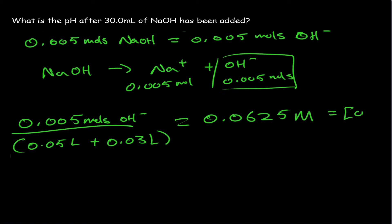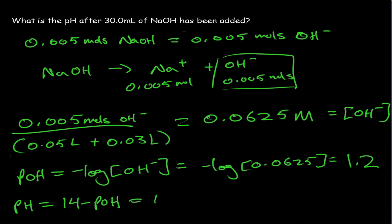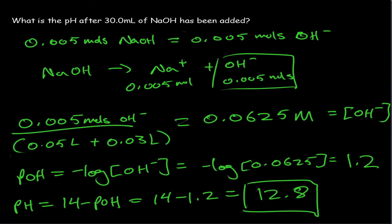To get the pH, we first calculate pOH as the negative log of the OH⁻ concentration: negative log of 0.0625 gives a pOH of 1.2. Then pH equals 14 minus pOH, which is 14 minus 1.2, giving us a pH of 12.8. Does this make sense? Yes — all the HCl was used up and converted into NaCl, so only hydroxide remains in the flask. Since hydroxide increases the pH, we have a very basic solution, hence pH 12.8.